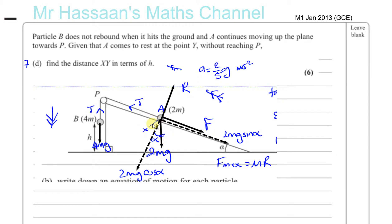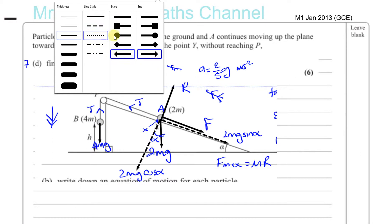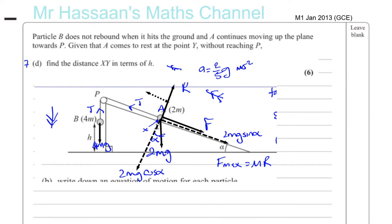So there's going to be a new situation. It says find the distance XY. Now X is where A is at the point when the string becomes slack — A has moved a distance of h meters, and that's the point at which B hits the ground. When it reaches that distance it's reached a certain speed, starting from rest.